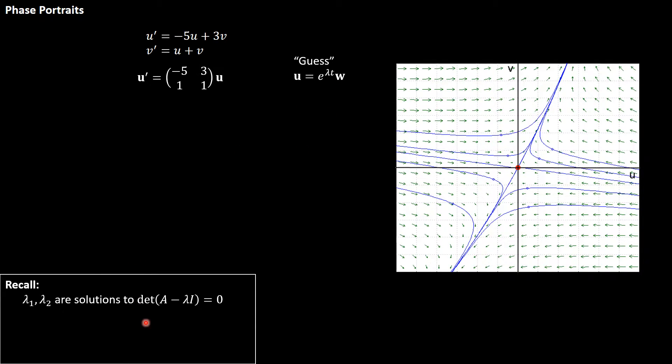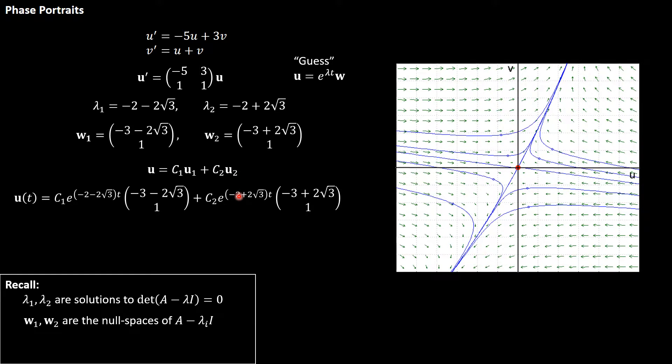They have to satisfy the eigen problem, which means that lambda 1 and lambda 2 have to be solutions to the characteristic equation, and w1 and w2 have to be the null spaces of those two matrices, so A minus lambda 1 I and A minus lambda 2 I. We discussed in the linear algebra segment how to do this by hand as well as how to do this by computer. I just used my computer to find these null spaces. I found a vector in the first null space and a vector in the second null space, here they are. Therefore my solutions are any linear combination of u1 and u2, where u1 is the first solution using lambda 1 and w1.